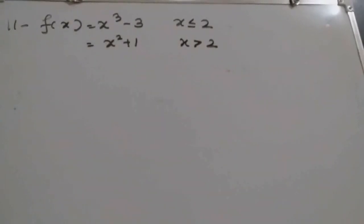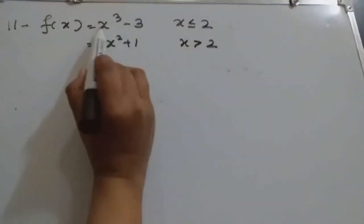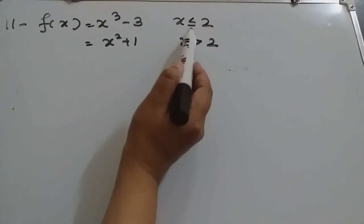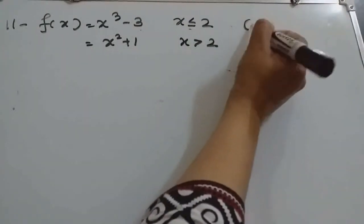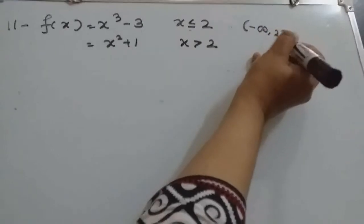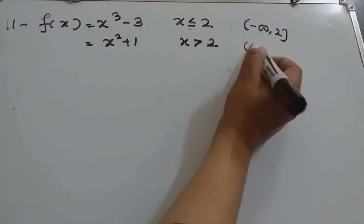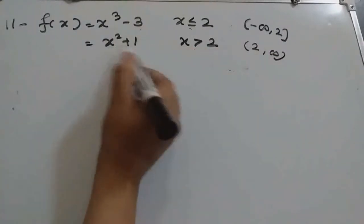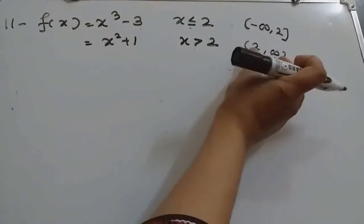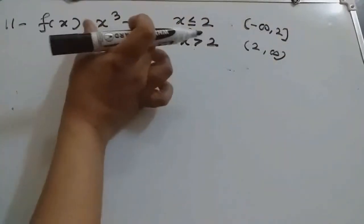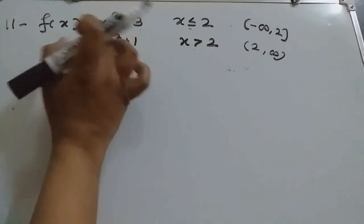The question is to find all the points of discontinuity of the given function. We know this is a polynomial, and for the domain minus infinity to 2, it will be continuous. And here also, for 2 to infinity, it will be continuous. So for these particular domains, each piece of the function will be continuous on its respective domain.